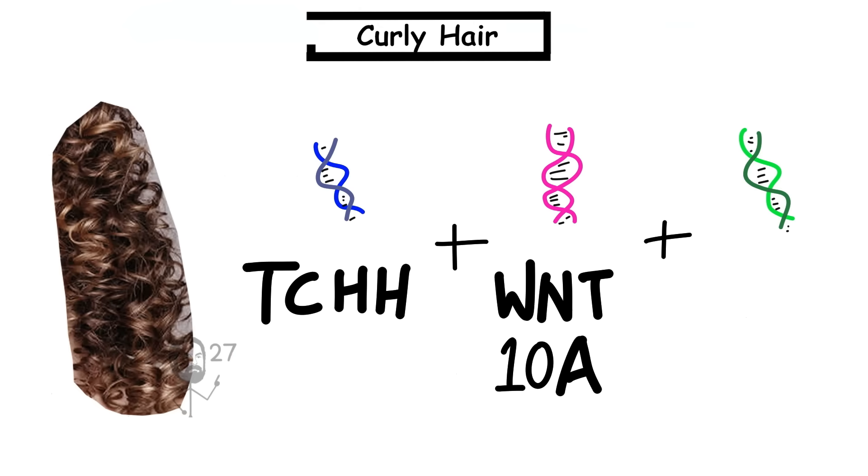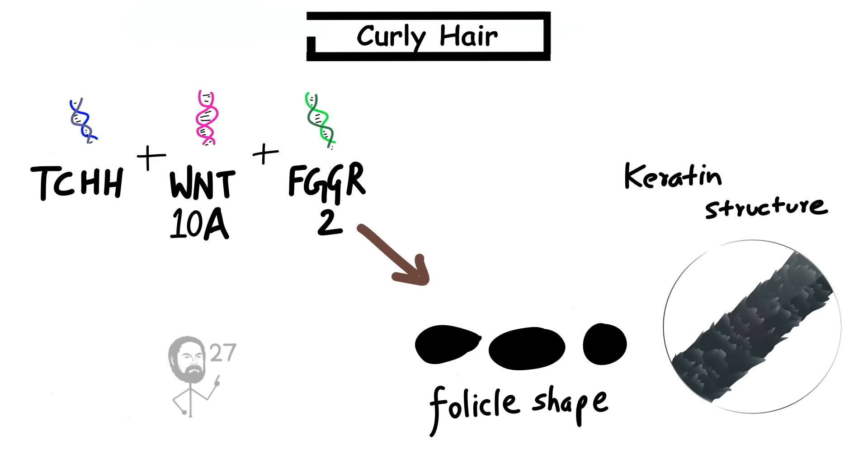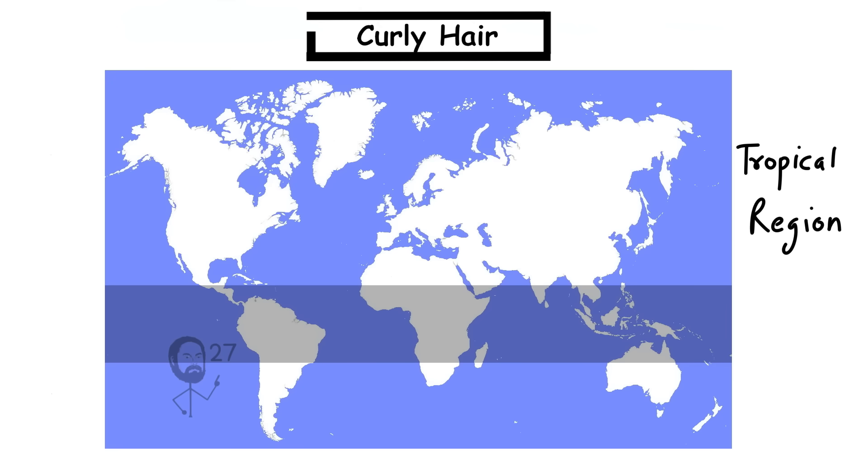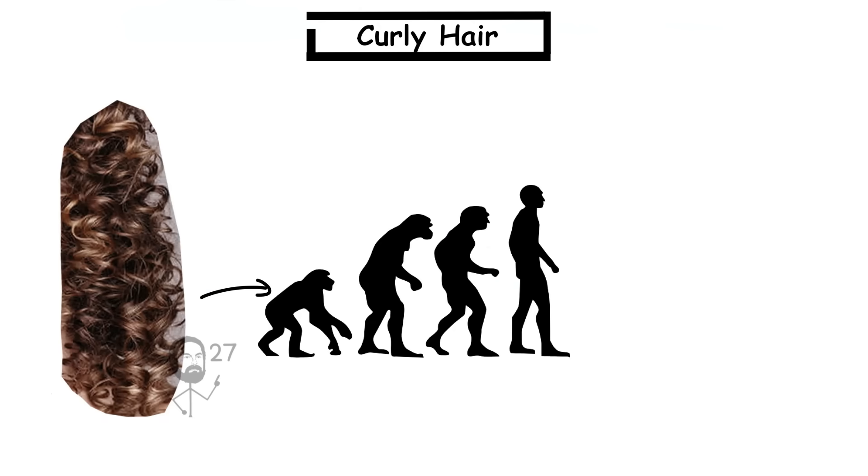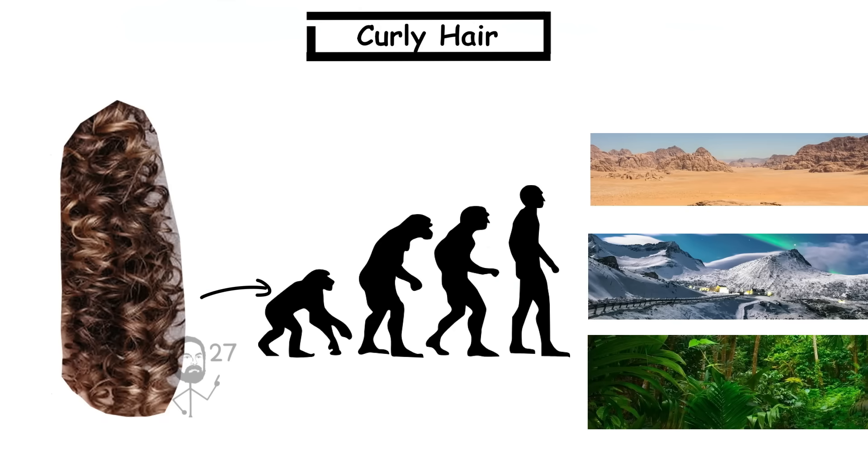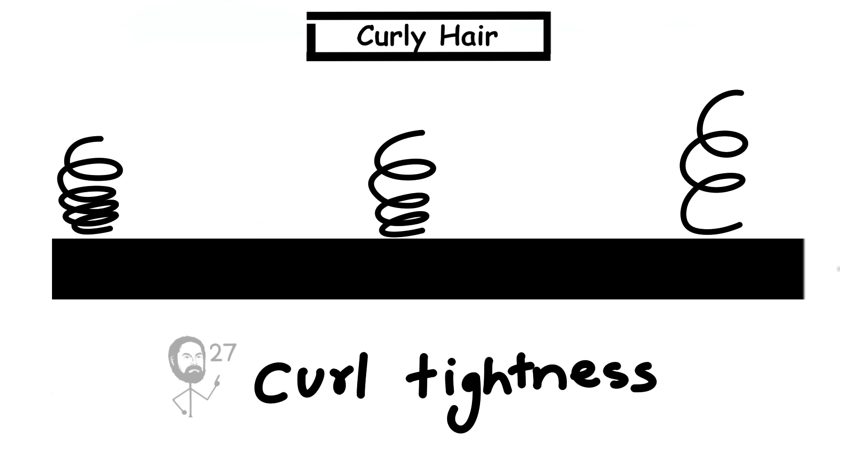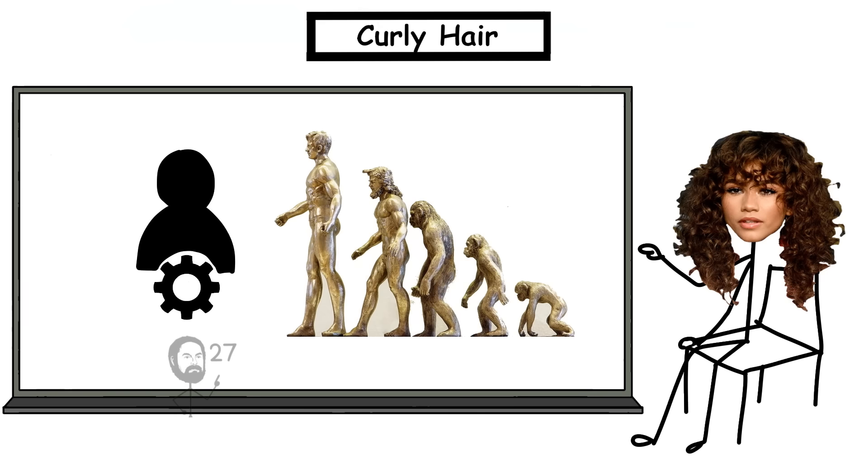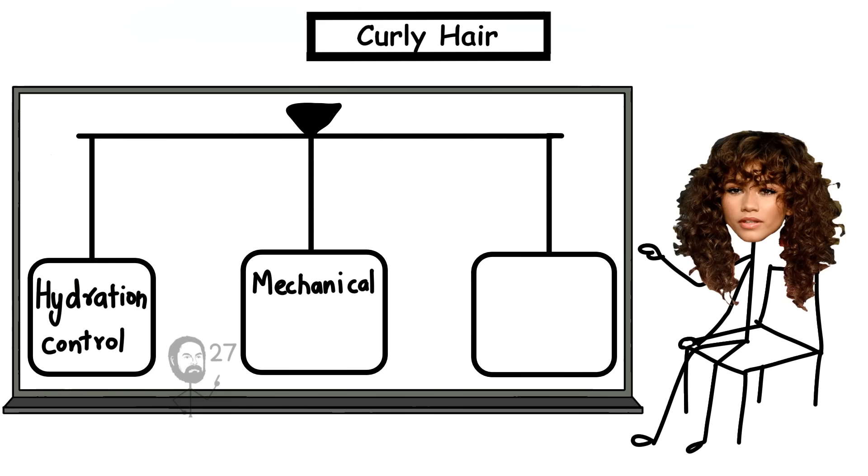Curly hair is driven by a combination of gene variants, most notably TCHH, WNT10A, and FGFR2, which control follicle shape and keratin structure. These genetic traits are especially common in populations from tropical regions where curl patterns likely evolved in response to environmental demands. The wide variation in curl tightness reflects how different spiral forms were subtly optimized through evolution to balance hydration control, mechanical resilience, and adaptive surface coverage.